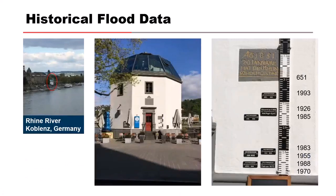Flood high water marks on buildings are common in Europe and can be found in the United States as well for very large floods. This is an ancient building in Koblenz on the Rhine, showing a high water mark of a flood in 651, which is the highest known stage, also compared to more recent floods in the photo on the right. These can be really valuable.